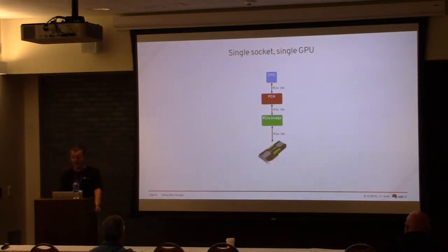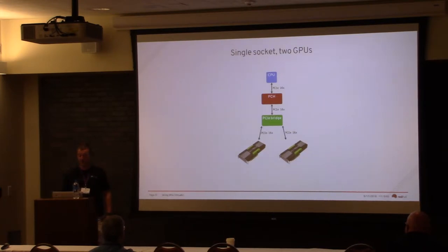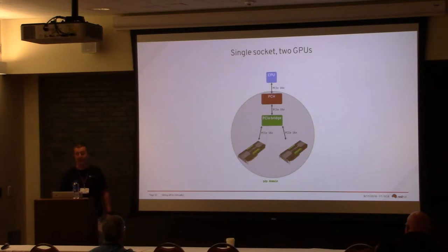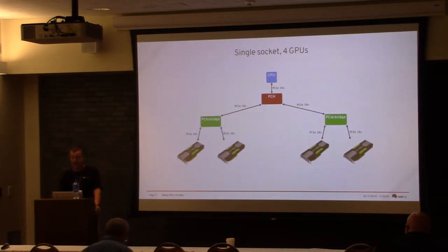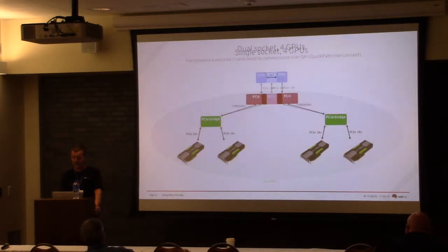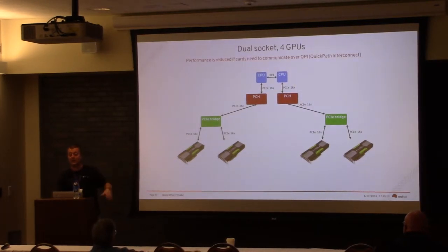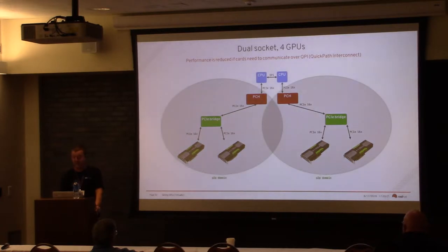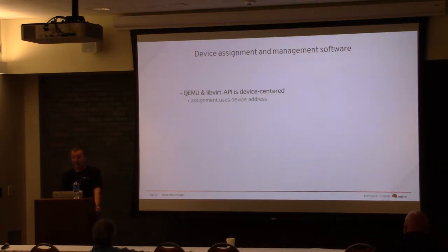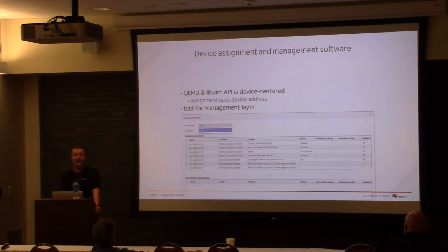If you have two GPUs connected to the same PCIe bridge, they can basically talk to one another — they're within a given peer-to-peer domain. But if you have to go through inter-processor communications with QPI, for instance, then it becomes much slower. The way you lay out your GPUs is not completely transparent, and from a management point of view, device assignment is not as simple as allocating memory or CPUs. Essentially, at the moment, it's really host-specific, meaning it's not very applicable for a cloud-style solution.